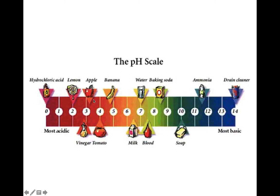Here is the scale. We have 7, which is neutral, where water is. As we go this way on the scale, the more acidic it is. There's milk with a pH of around 6.5, then a banana with a pH of around 5, tomato with a pH of 4, vinegar at pH 3, apple at pH 3, lemon - nice and sour - is a pH of 2. And way on the end is hydrochloric acid, which is a pH of 0.